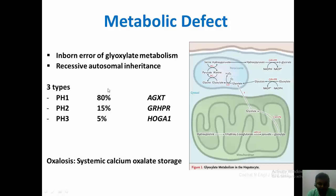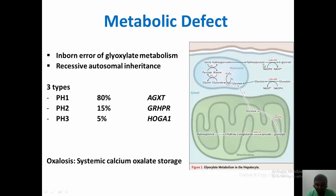Primary hyperoxaluria type 1 (PH1) comprises eighty percent of total primary hyperoxaluria and occurs due to deficiency of alanine glyoxylate aminotransferase (AGXT). The second type, PH2, comprises fifteen percent of total primary hyperoxaluria and is due to deficiency of glyoxylate reductase and hydroxypyruvate reductase (GRHPR).